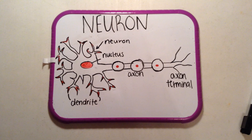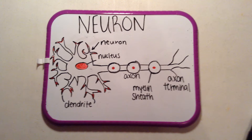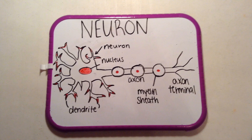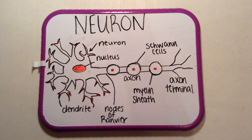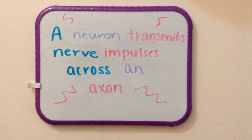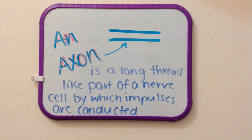An action potential, which is the passage of an impulse along the membrane of a cell, occurs on a neuron, on the axon. On the axon, this all happens on the nodes of Ranvier, which is a gap between the myelin sheath of a nerve.